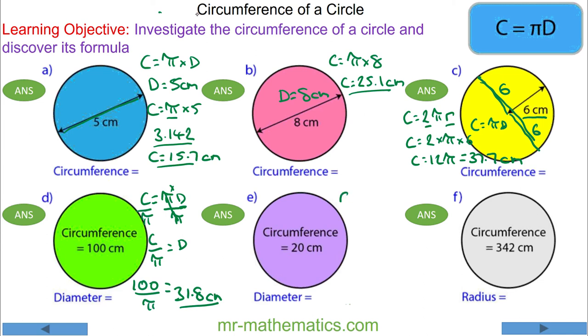Same idea: circumference is pi times diameter, so divide both by pi to make the diameter the subject. So C divided by pi equals D. The circumference is 20, so 20 divided by pi, and we get 6.37 centimeters.